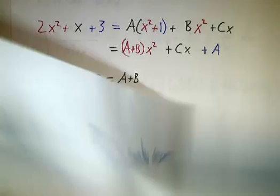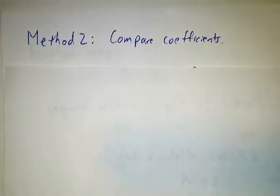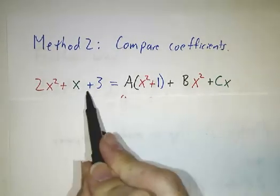Now the other method says if you have two polynomials that are equal, then their coefficients of x squared have to be the same, and their coefficients of x have to be the same, and their coefficients of 1 have to be the same.